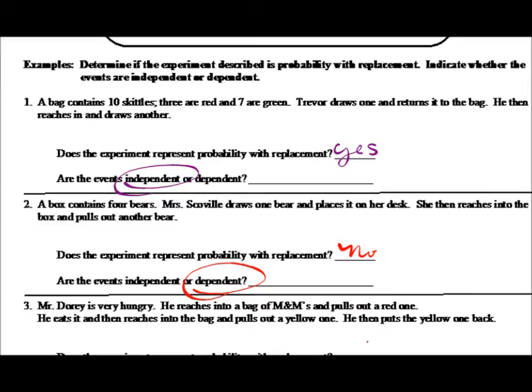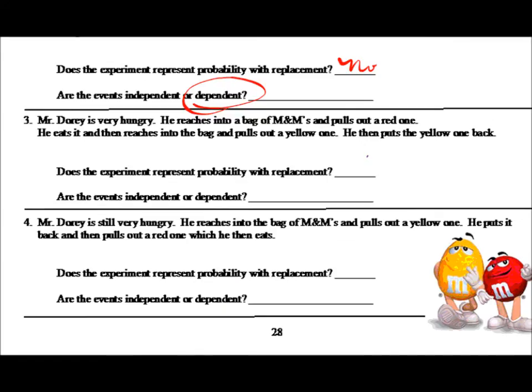Examples three and four show other scenarios. Example three: Mr. Dory is very hungry. He reaches into a bag of M&Ms and pulls out a red one and eats it, then reaches in to pull out a yellow one, then puts the yellow one back. Does this experiment have probability with replacement? No, it does not. Because Mr. Dory pulled one M&M out and ate it, that M&M is no longer in the bag for the second trial. The quantity and probabilities have changed. Therefore, these events are dependent — what happened the first time had a very big impact on what could happen the second time.